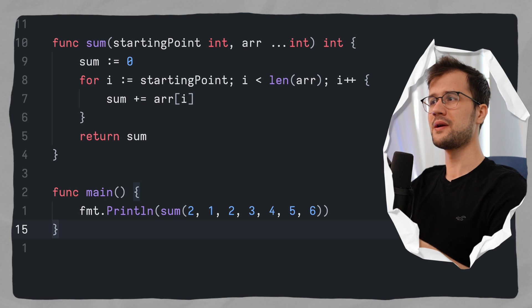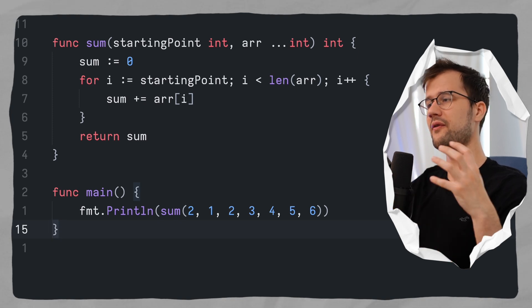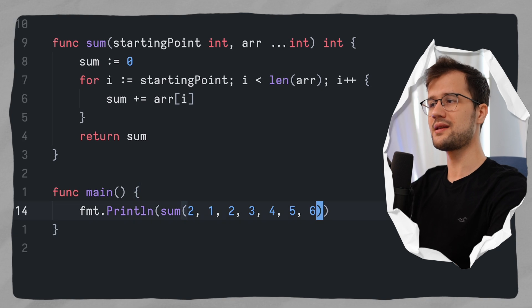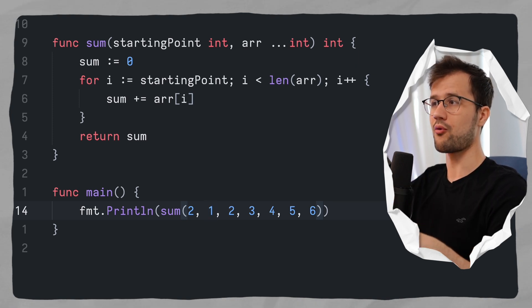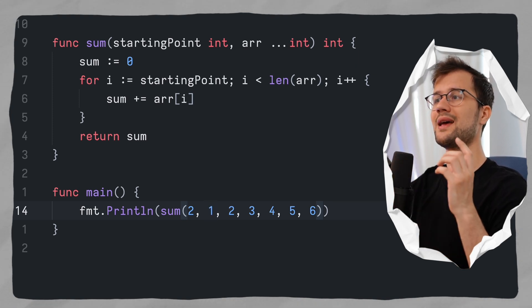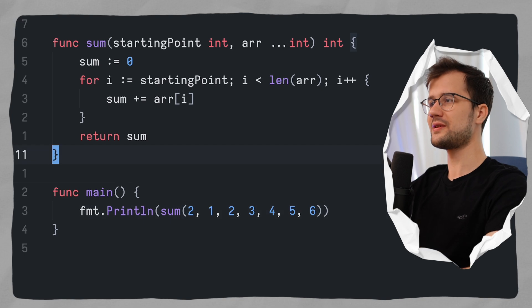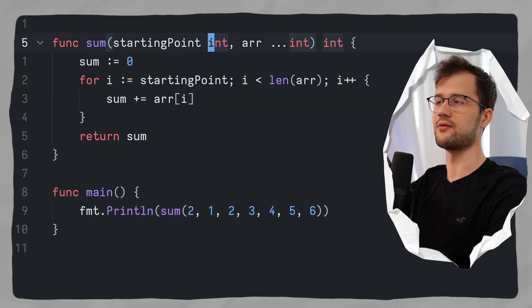But Golang automatically knows that the starting point is just the first argument. So it takes in the starting point as our two here and then the rest is basically the variadic function parameter. So our kind of slice we use in the sum function. Now obviously we can mark this as a string for instance as well.